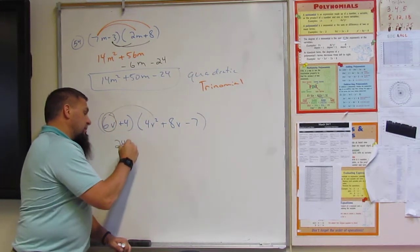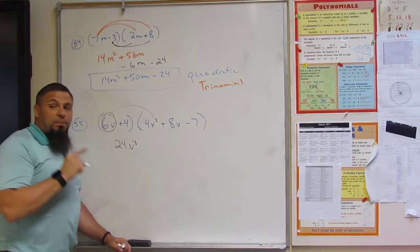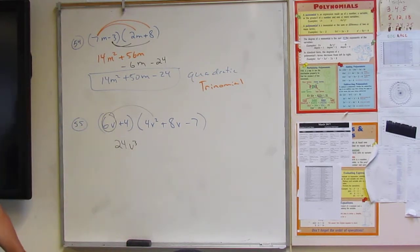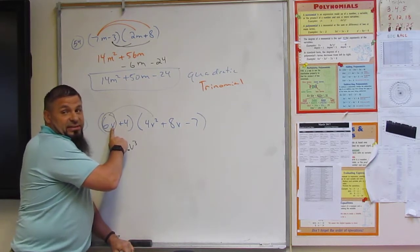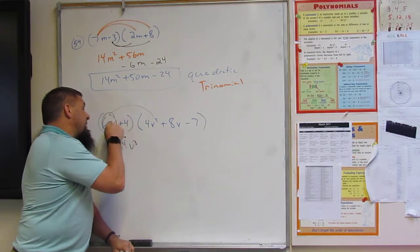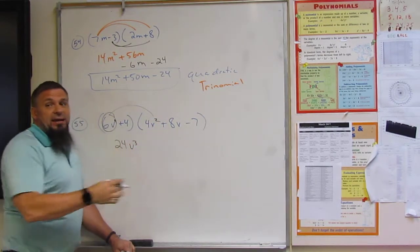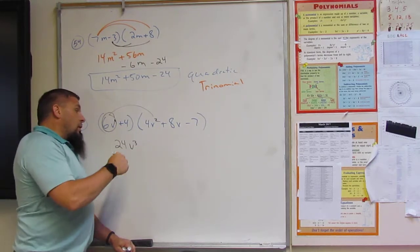Or times 1. We are. But we're adding the exponents. Remember? That's the rule with exponents. We're multiplying variables that have the same base. We add the exponents. This is a 1. This is a 2. So we add them to V³.